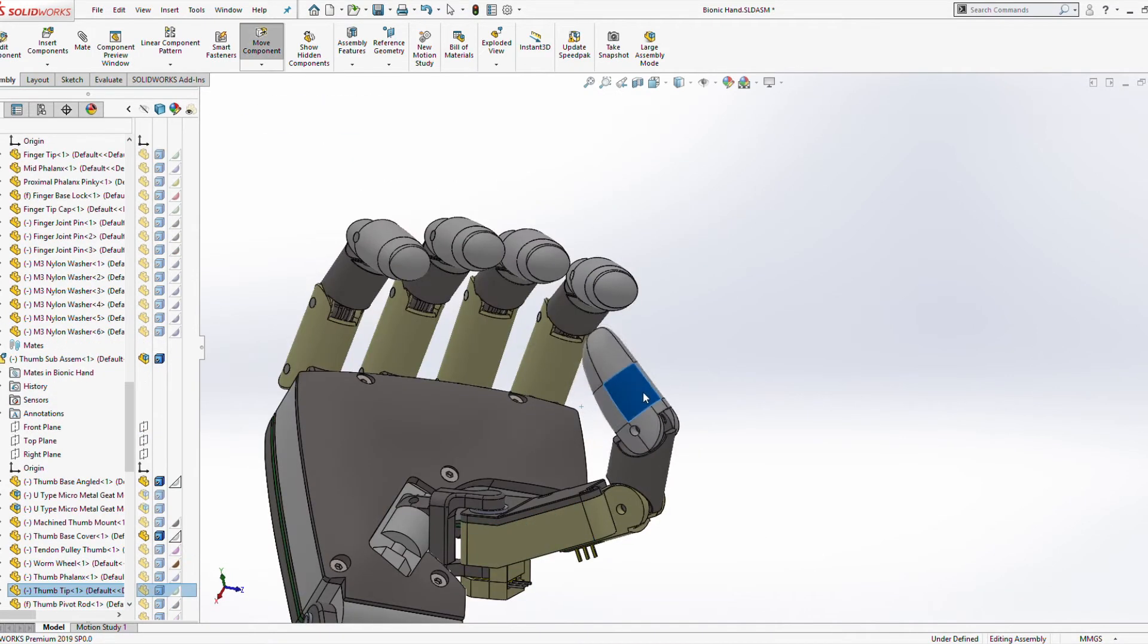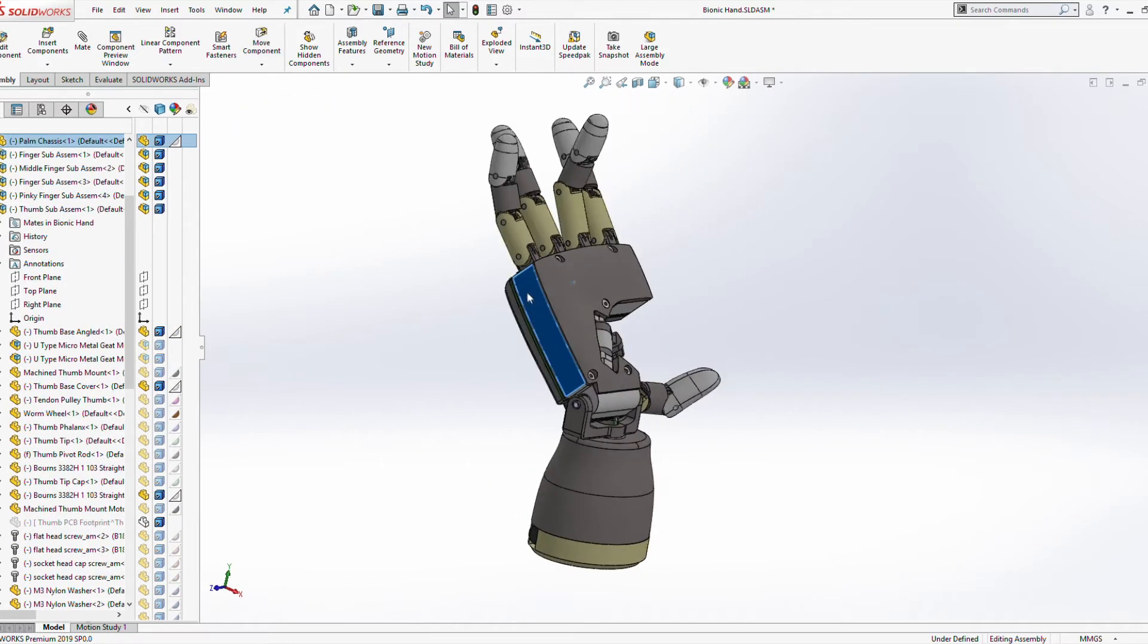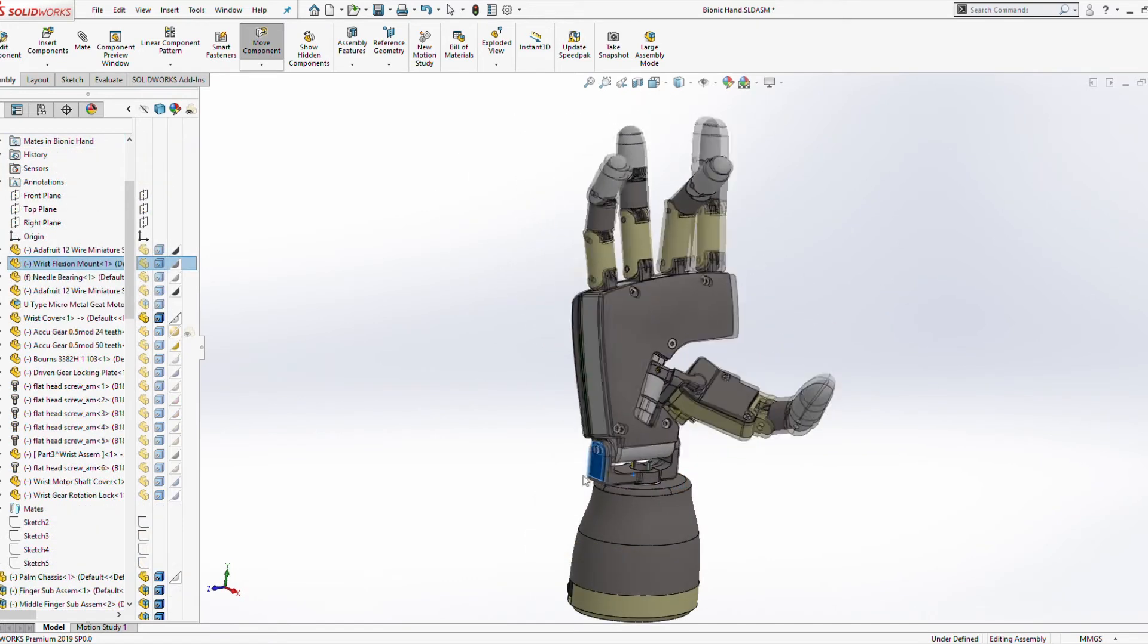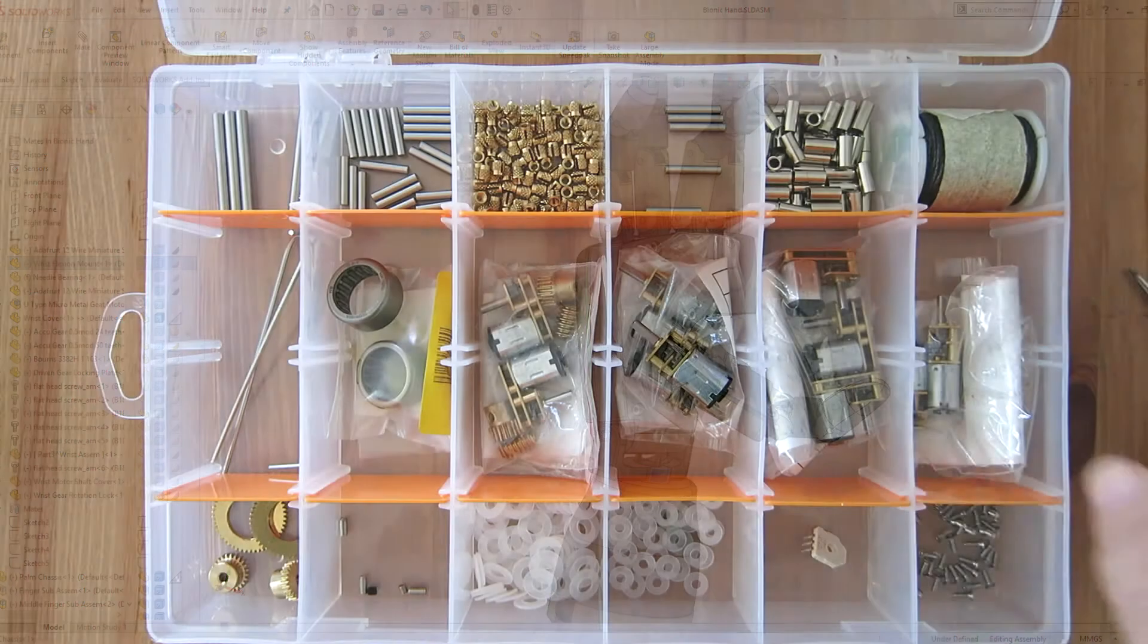And of course the hand will be able to completely grip some kind of round object. The wrist will also be able to flex back and forth. And it will also be able to rotate, which isn't common in commercial prosthetic arms.